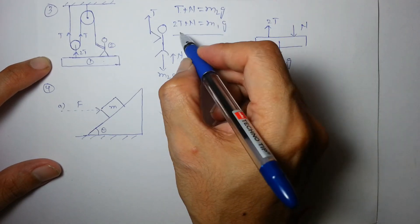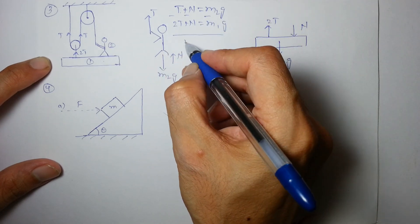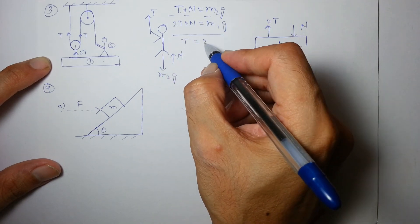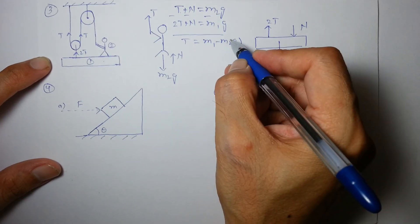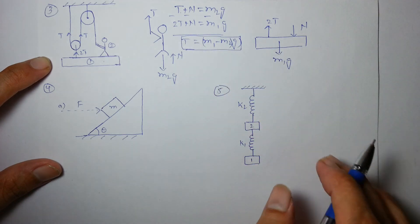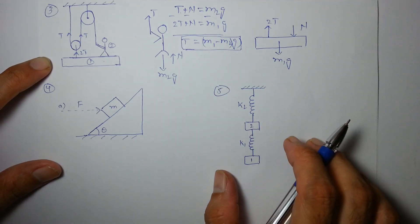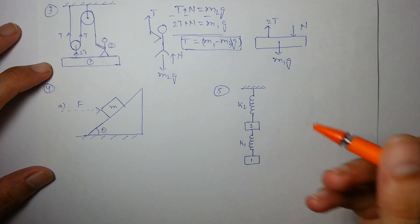So, by subtracting these, I can easily get minus minus minus. T is equal to m1 minus m2g. So, this is the amount of force. So, this is the amount of force, the person will have to apply to keep the whole system at equilibrium. Oh, sorry. I have made a slight mistake.